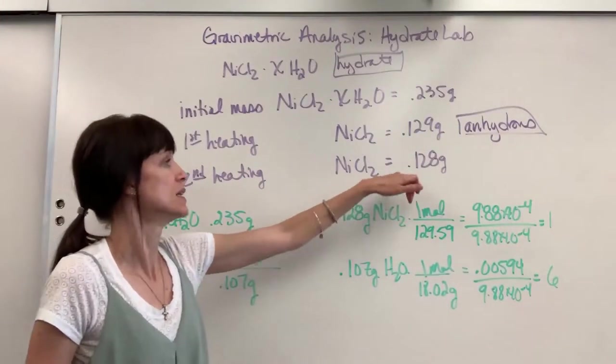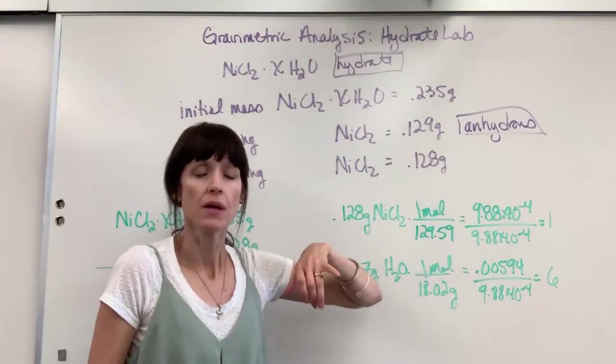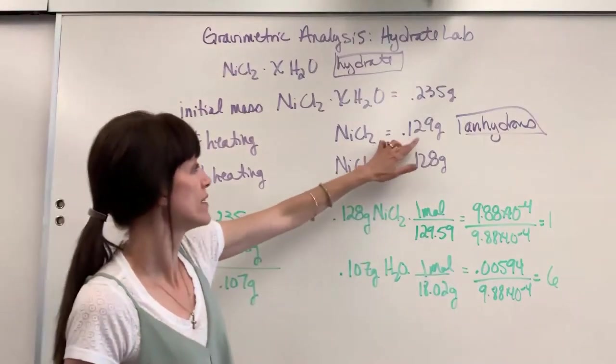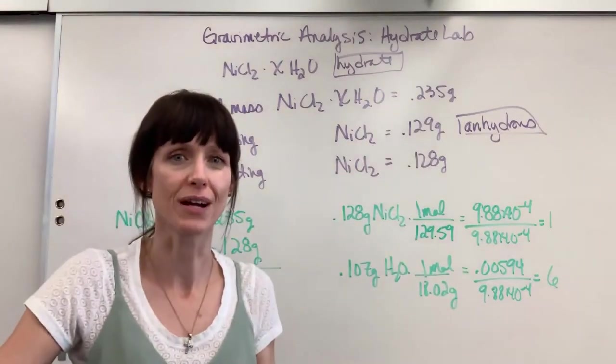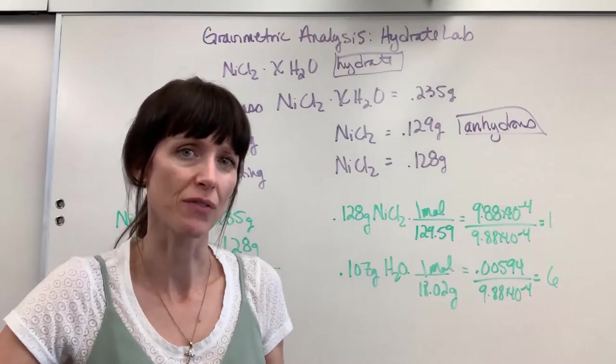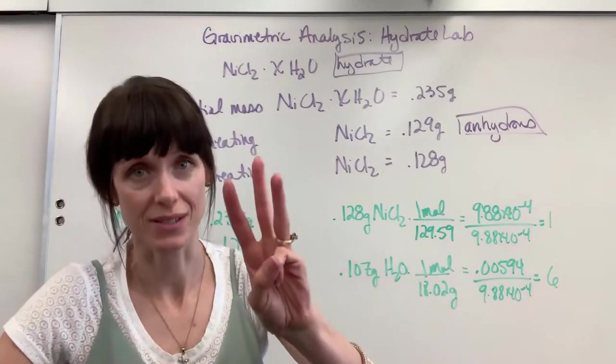So my second mass is 0.128 grams. Now, if you have a difference of 0.05 grams, it means that you haven't driven off all of your water, and you need to cook it a third time. You've got to heat it a third time.